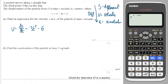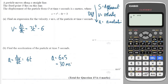It says find the acceleration at time t equals 5. To go from velocity down to acceleration I will differentiate the velocity with respect to time. So differentiating: 2 times 3 is 6, drop the power down by 1, constants differentiate to 0. The acceleration at t equals 5 will be 6 times 5, which is 30 metres per second squared.